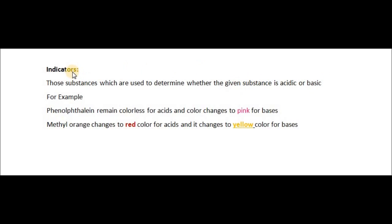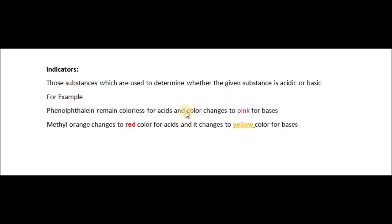Indicators are generally solutions or substances used for the determination of whether a substance is acidic or basic. For example, phenolphthalein remains colorless for acids and its color changes to pink for bases. So phenolphthalein acts as an indicator for both acids and bases.